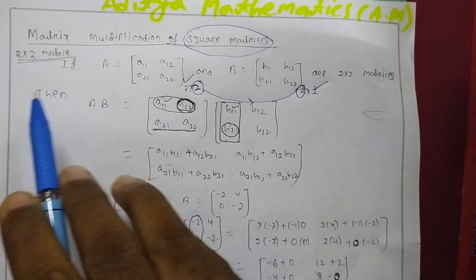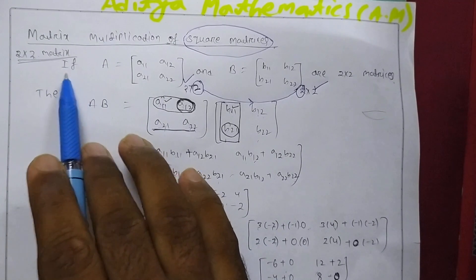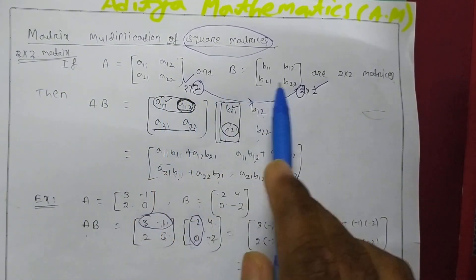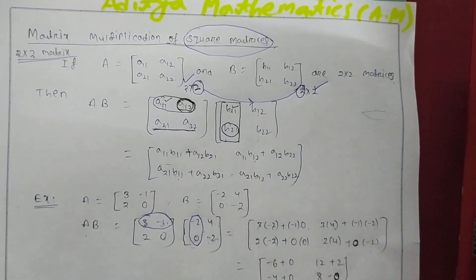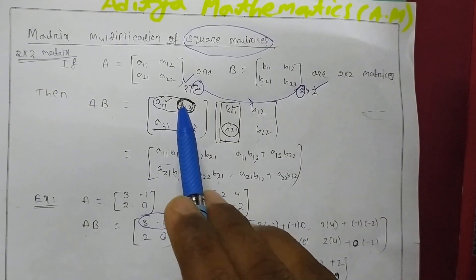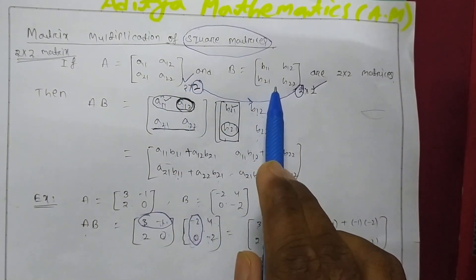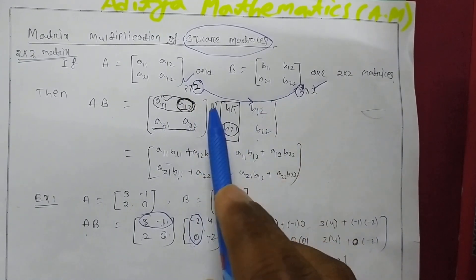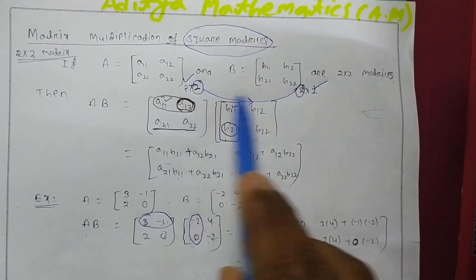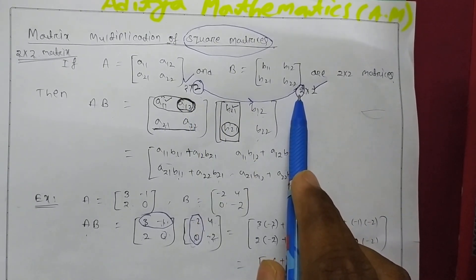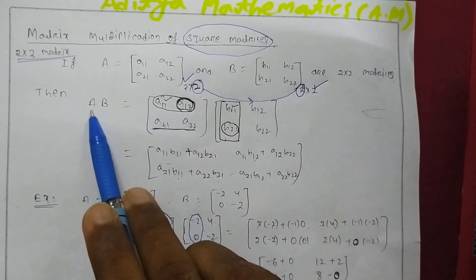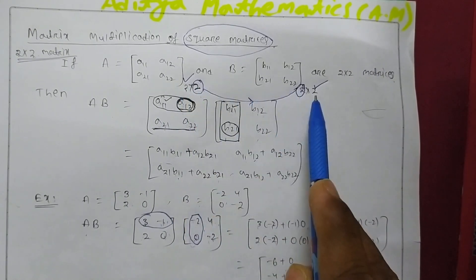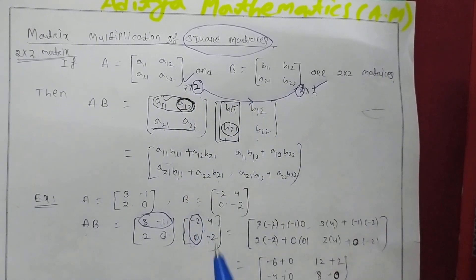Okay, here I am multiplying 2 cross 2 matrices. If A is a 2 cross 2 matrix and B is 2 cross 2 matrices, then we will multiply. So before first, you have to remember one thing: when you are multiplying 2 matrices, the number of columns of first matrix must be equal to number of rows of second matrix. That is here it is 2 and in B it is also 2, then we can multiply. And we will get order of matrix AB which is equal to the number of rows of first matrix and number of columns of the second matrix, that is 2 by 2.